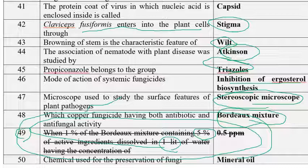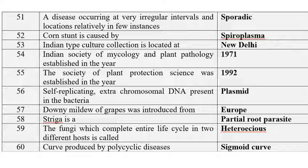The chemical used for the preservation of fungi is mineral oil. A disease occurring at very irregular intervals and locations in relatively few instances is called a sporadic disease. Citrus stubborn disease is caused by spiroplasma, and it is the first spiroplasma disease to be discovered. Spiroplasma was first discovered by Davis et al. in the year 1972.